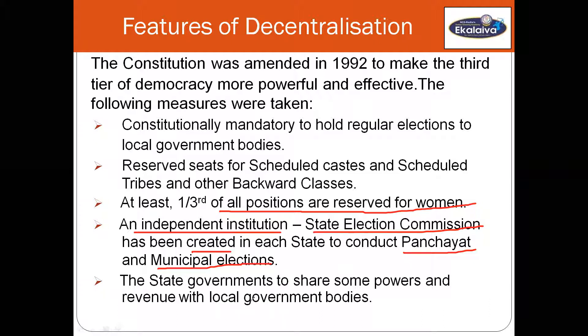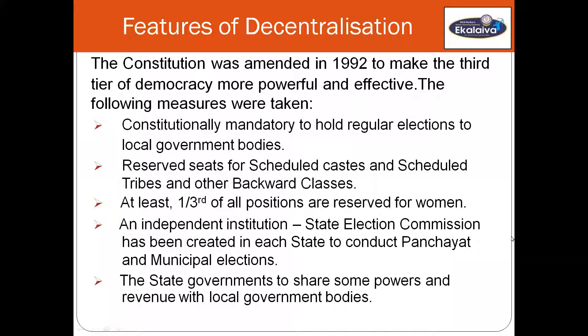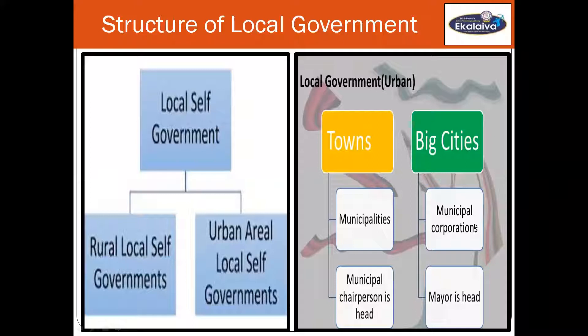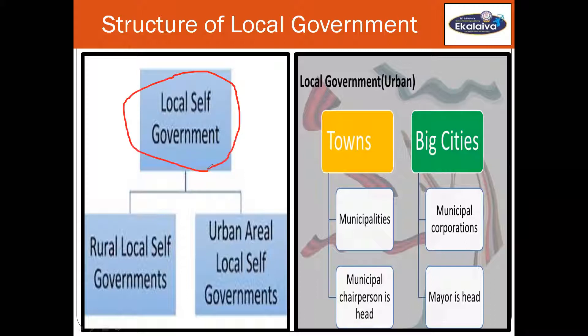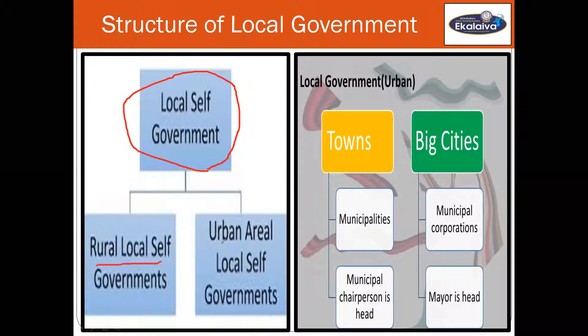The state governments are required to share some powers and revenue with the local government bodies, but the nature of sharing of power and revenue varies from state to state. Local government has been divided into rural local self-government and urban local self-government.